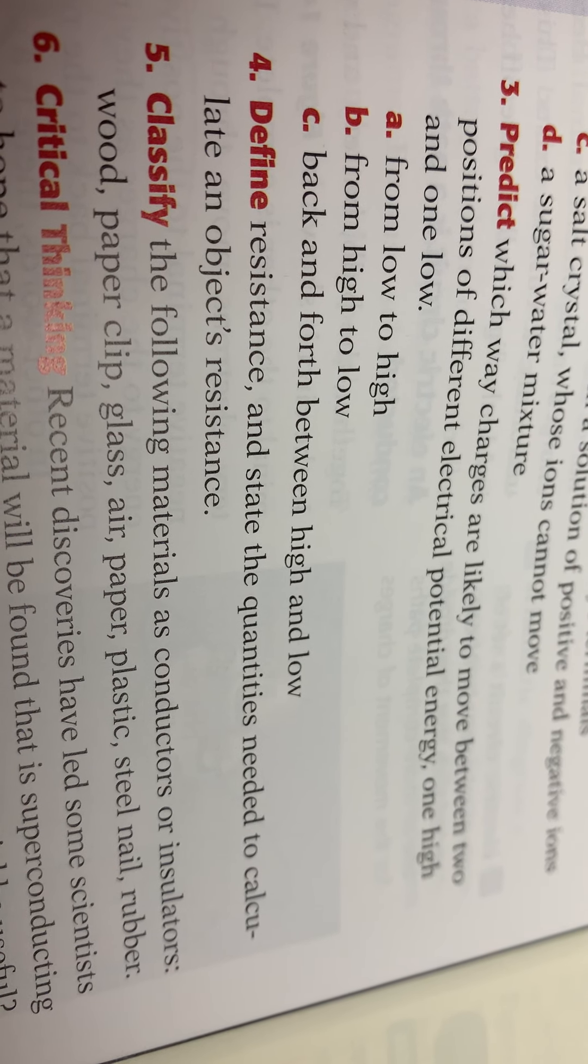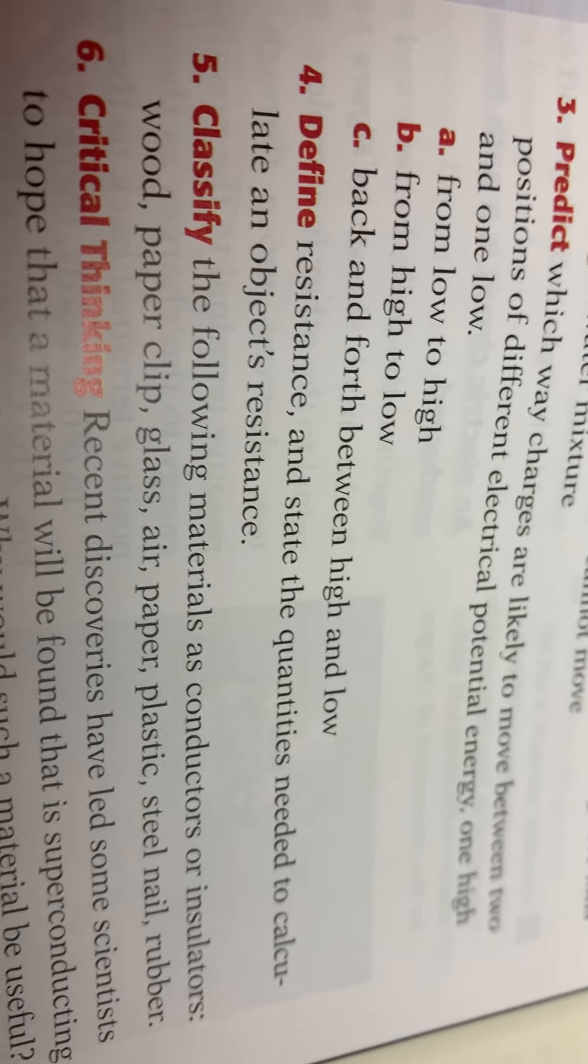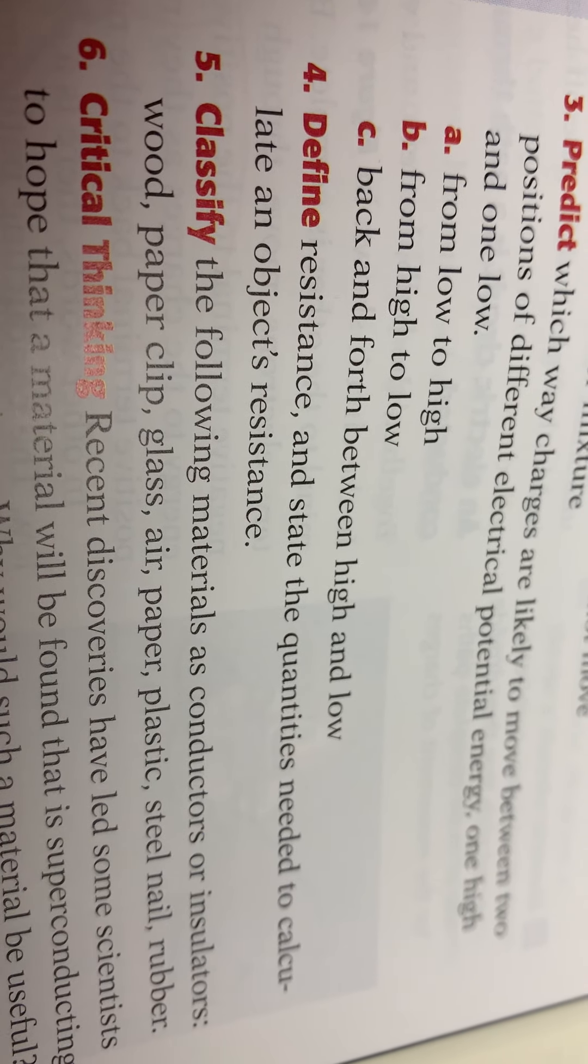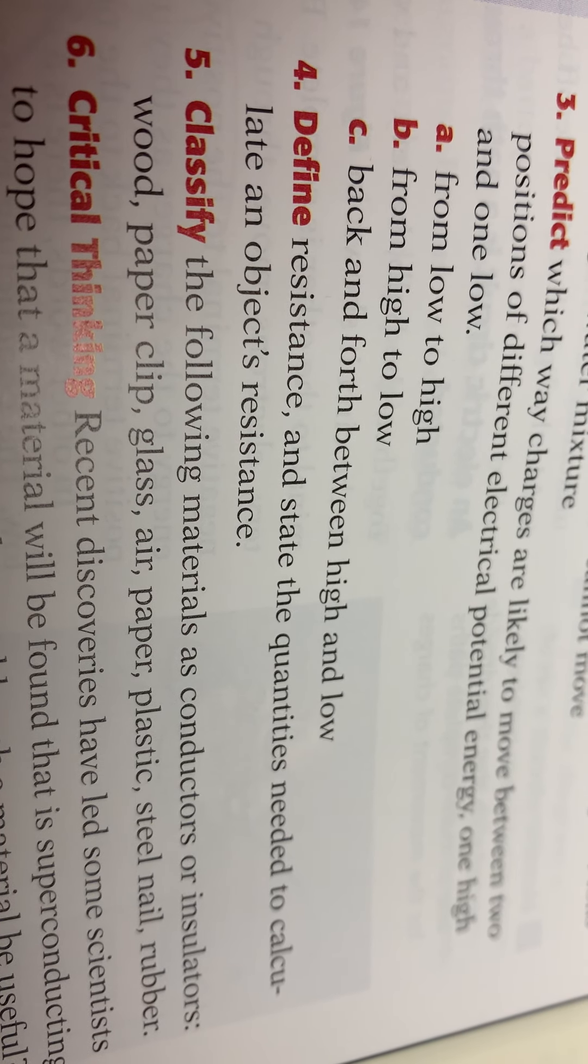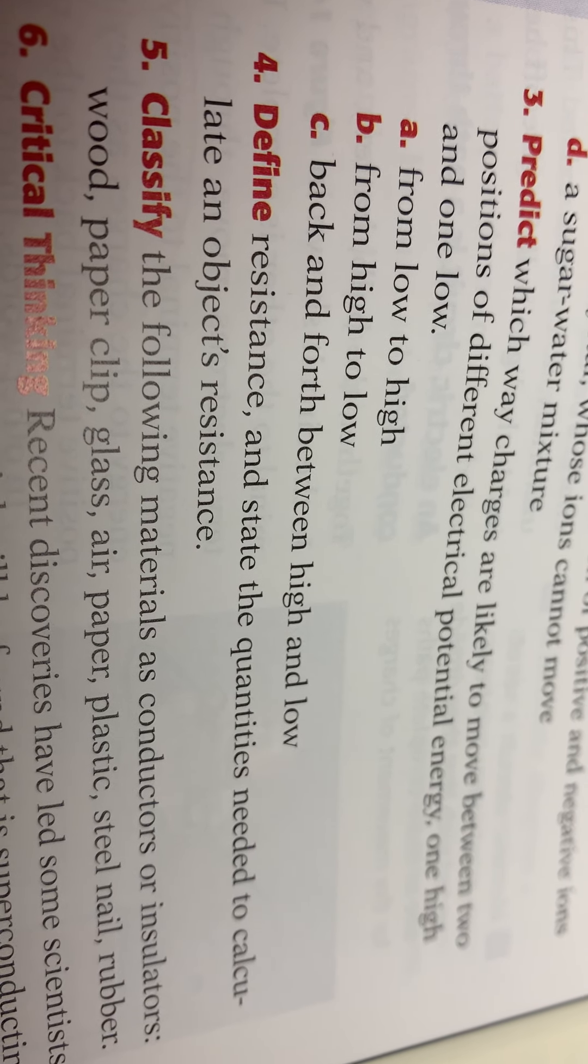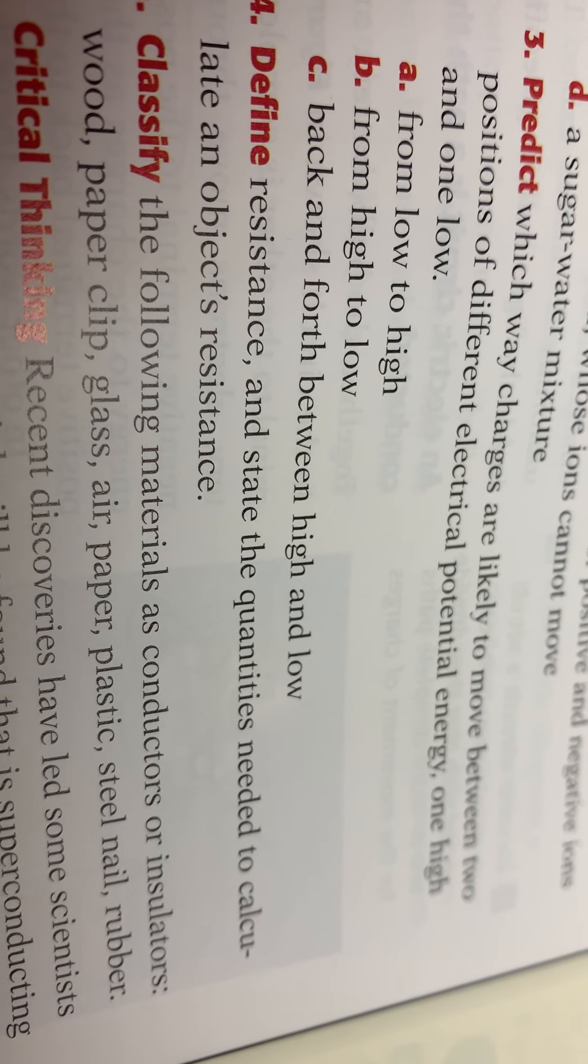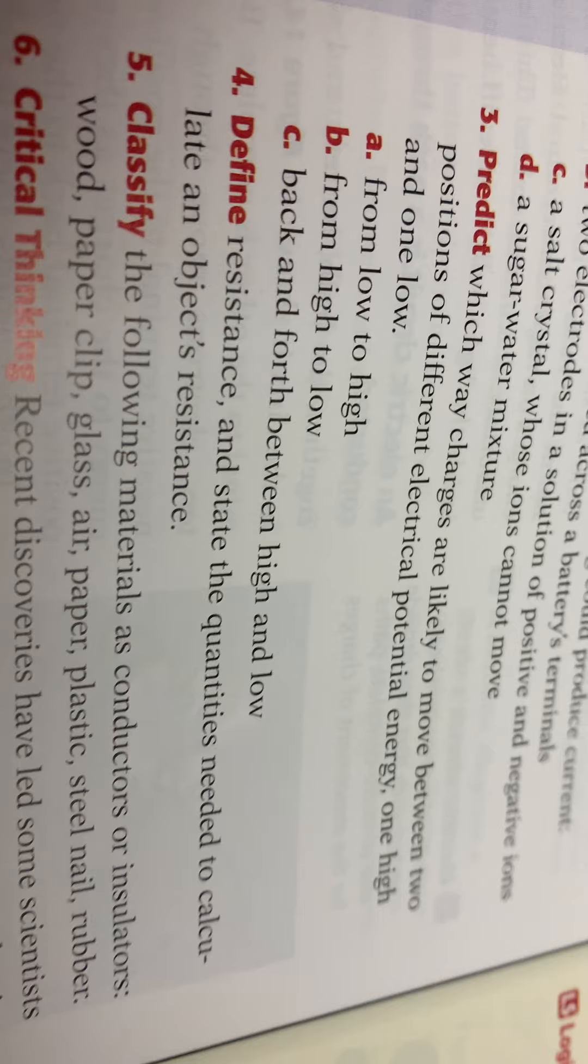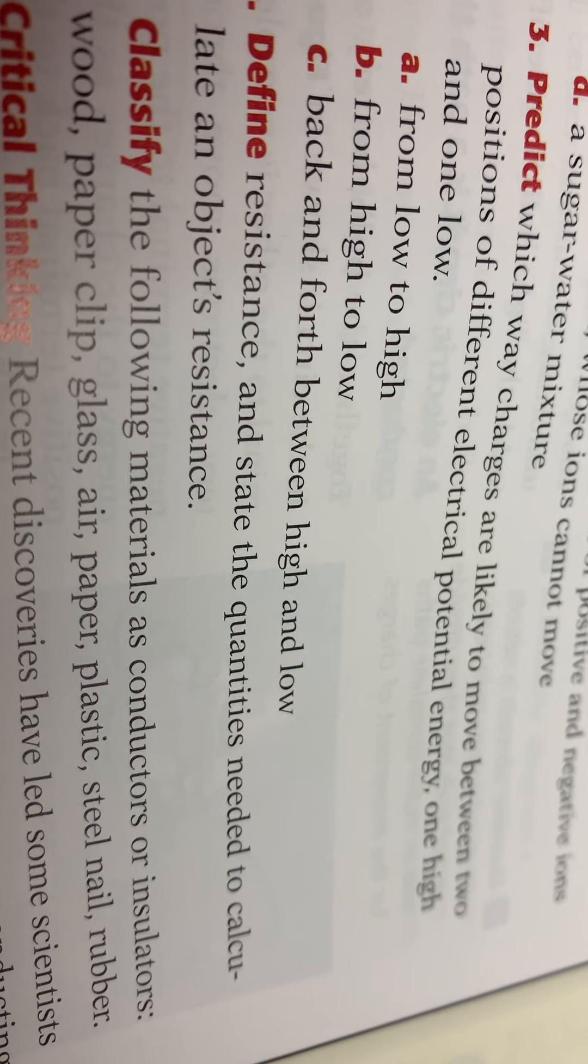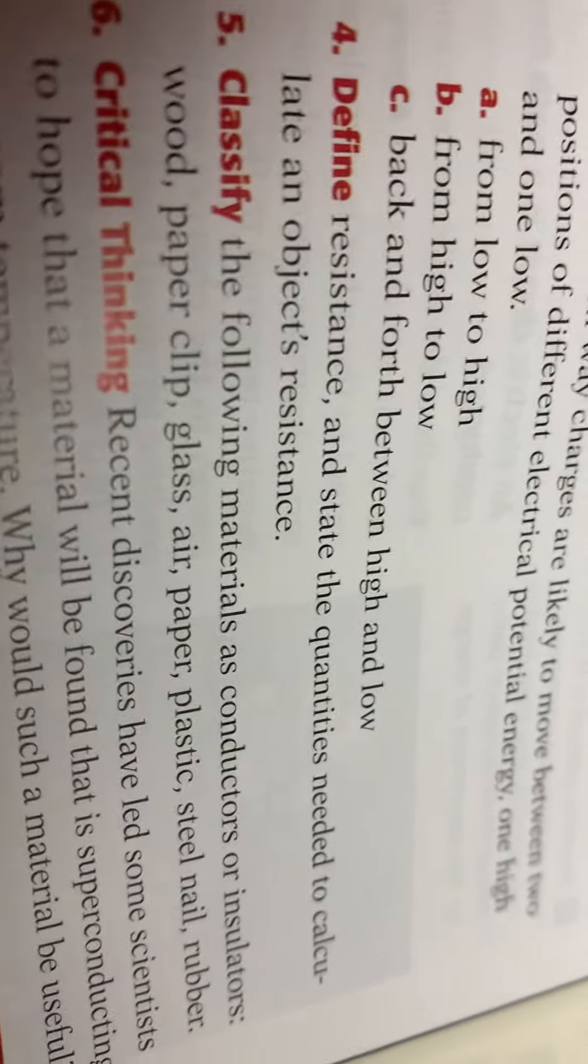And number five, insulators or conductors: wood, insulator. Paper clip, if it's a metal it's a conductor, if it's a plastic one it's an insulator. Glass, insulator. Air, insulator. Paper, insulator. Plastic, insulator. Steel nail, conductor. And rubber is an insulator, that's why the workers use rubber gloves. We don't always think of air as an insulator, but think about this way: if you get those puffy jackets, the puffer jackets, they keep you nice and warm, they have air pockets inside of them.